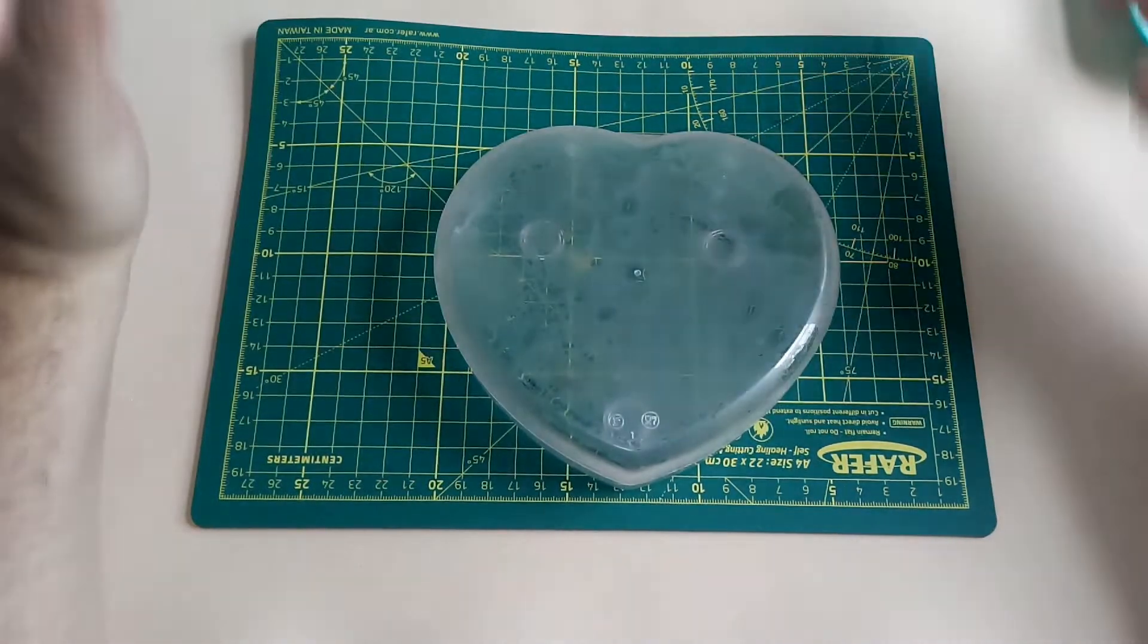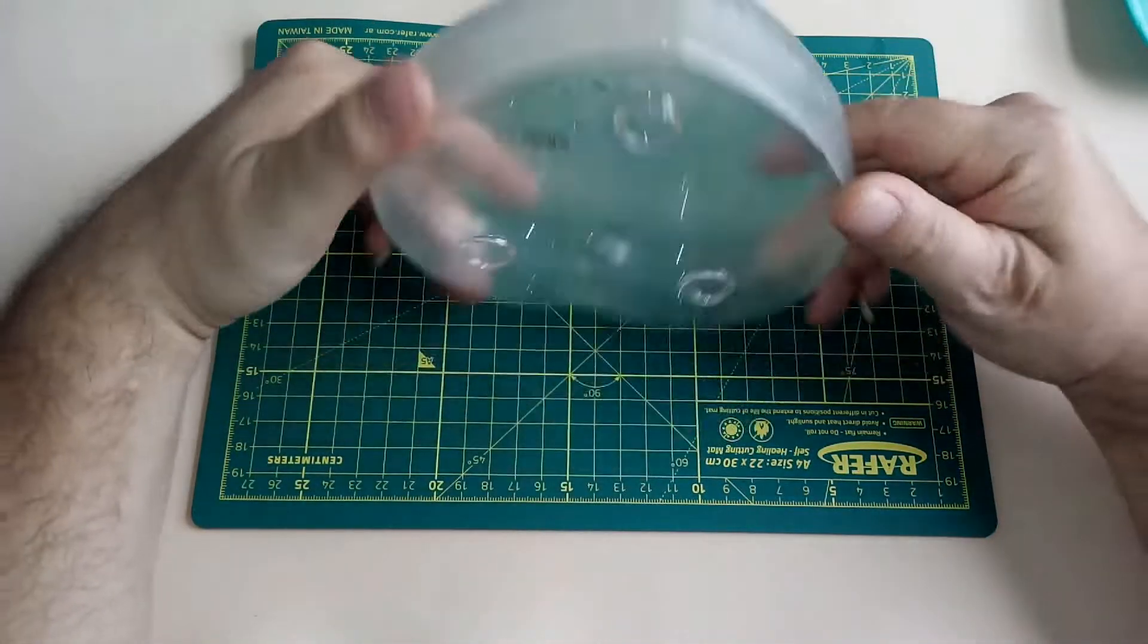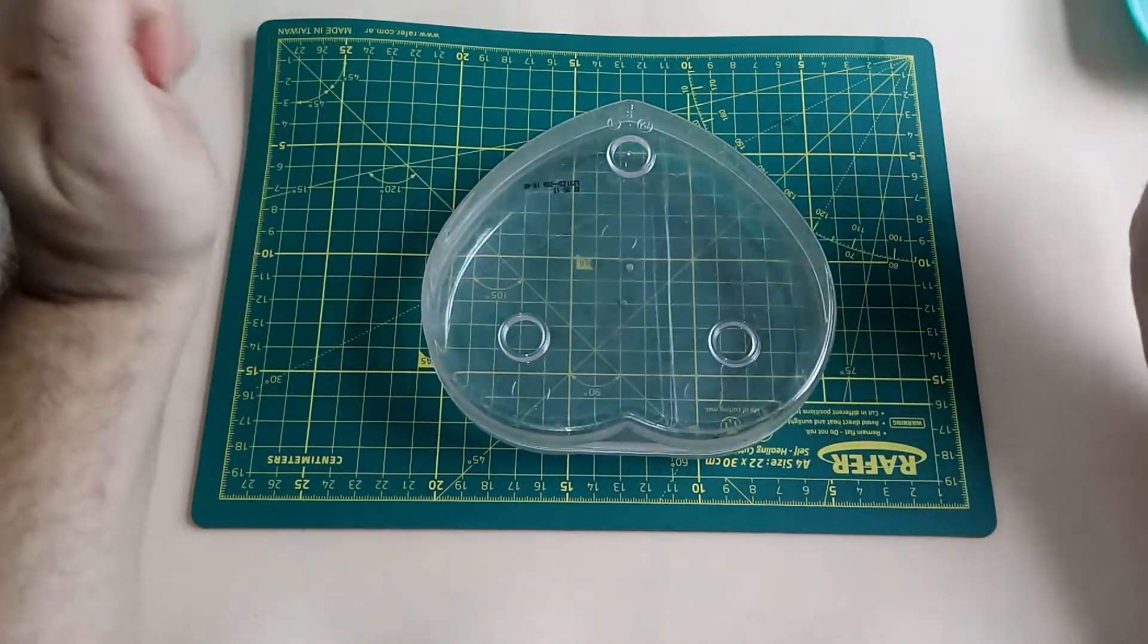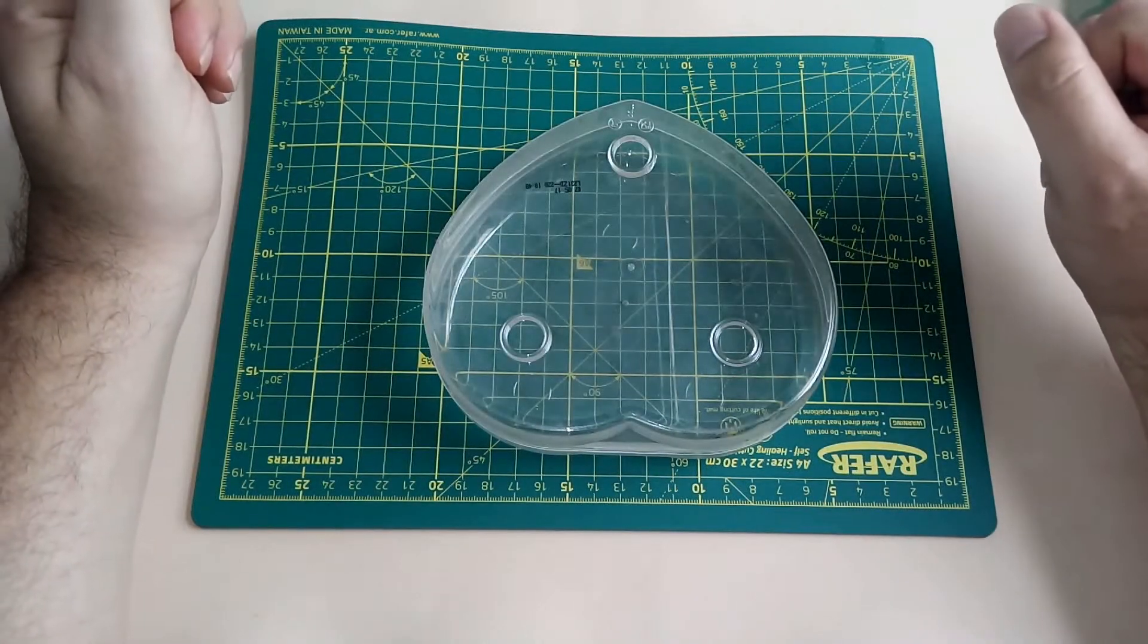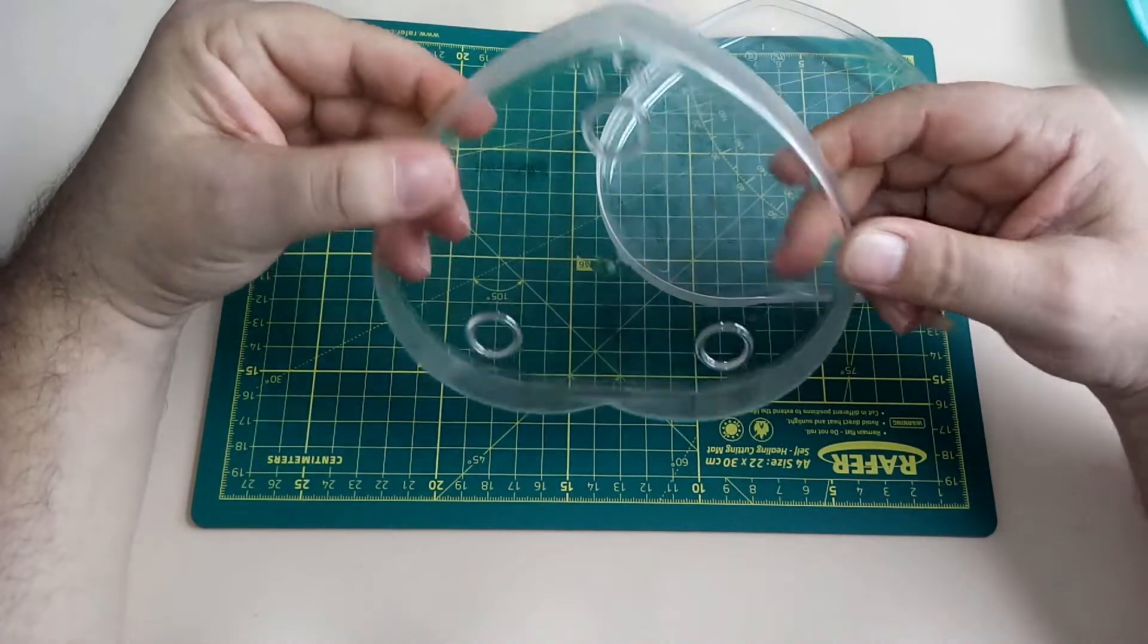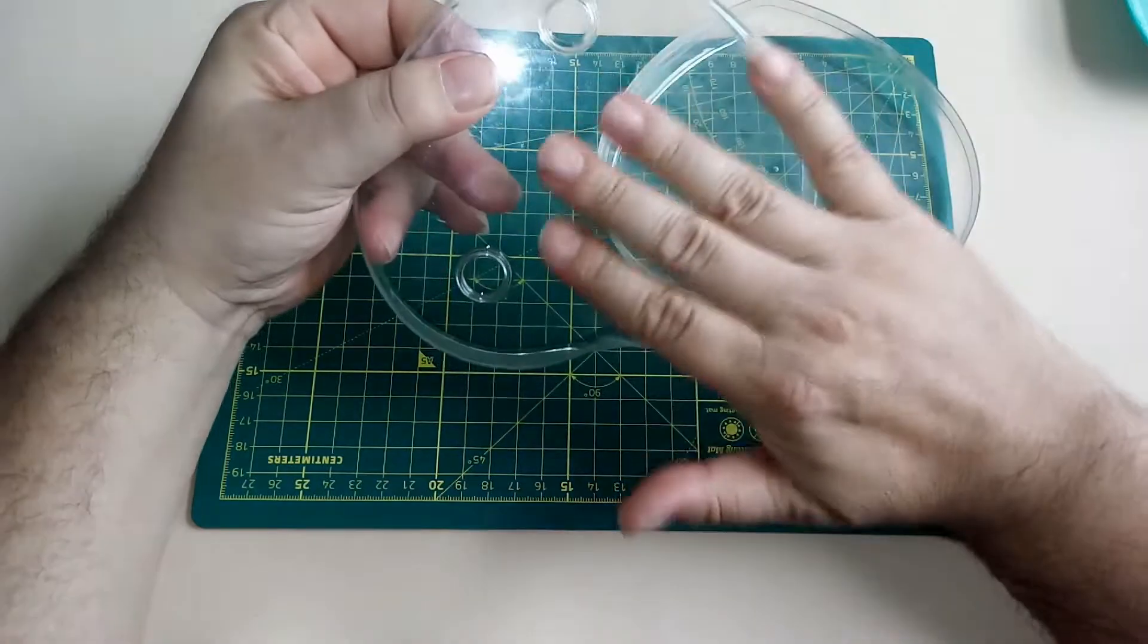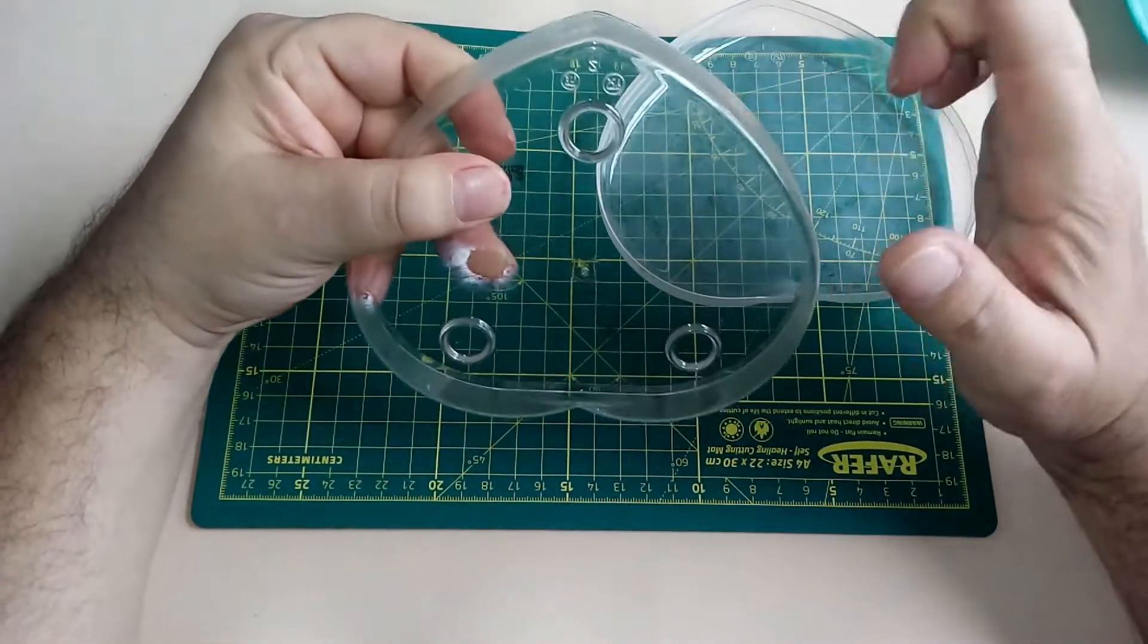Bienvenidos a un nuevo video. Hoy vamos a trabajar con este tipo de cajas. Es una caja de acrílico en forma de corazón que traía unos dulces. Este tipo de acrílico es muy liso, muy transparente y muy frágil.